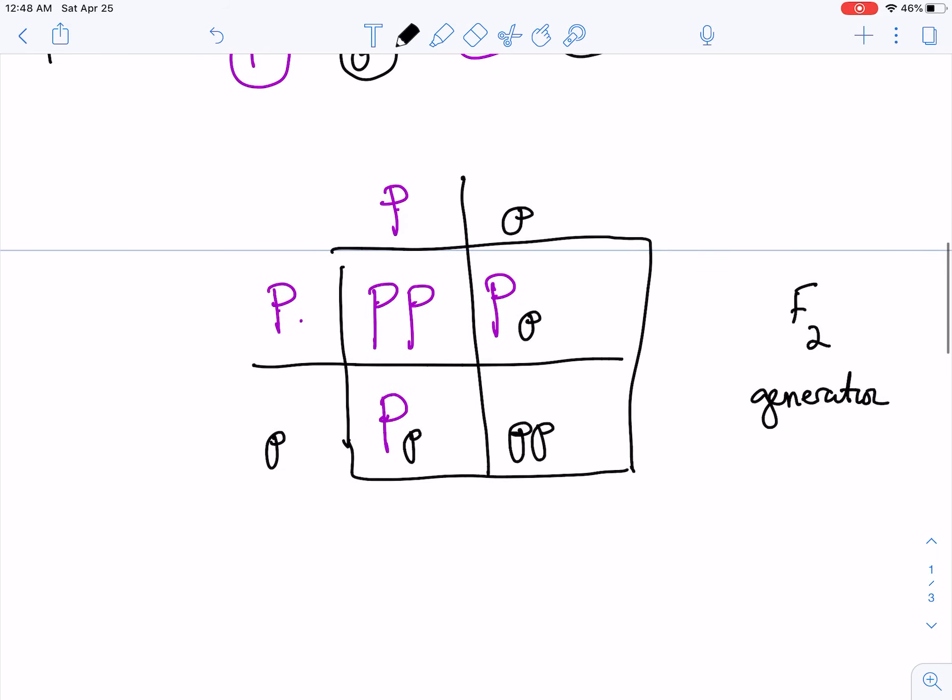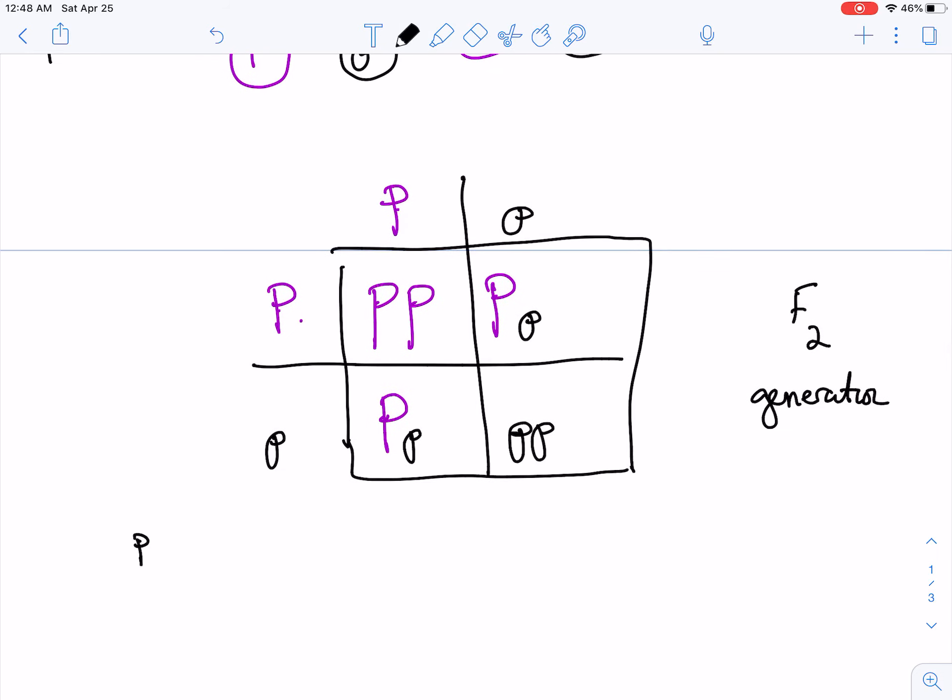All right, so the phenotypic ratio - which is, what does it look like? So this one's purple, right? That's homozygous dominant. This one's purple, that's heterozygous. This one's purple, this is also heterozygous. But this one is white. So the phenotypic ratio is three to one - three purple, and I like to write this underneath just so I keep it straight for myself - three purple to one white.